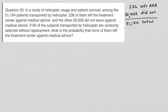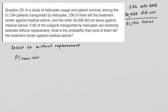It says, if 60 of the subjects transported by helicopter are randomly selected without replacement, what is the probability that none of them left the treatment center against medical advice? So we want to find the probability that none left AMA.